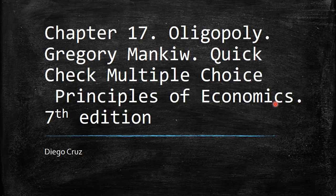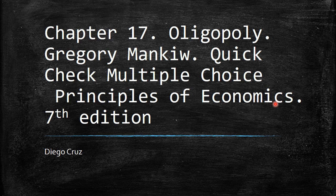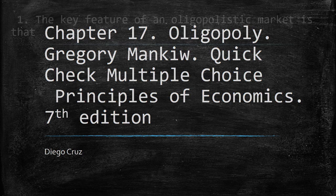Hi everyone, welcome to this new video. We are going to talk today again with chapter 17, Oligopoly. This is the book of Gregory Mankiw, Principles of Economics, 7th edition. We are going to work throughout the quick check multiple choice.